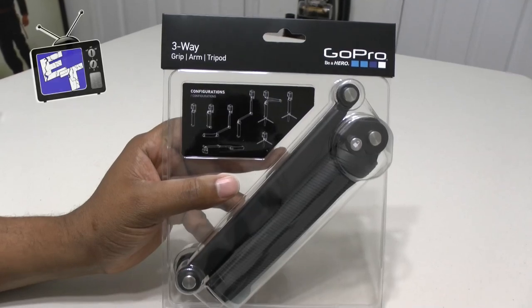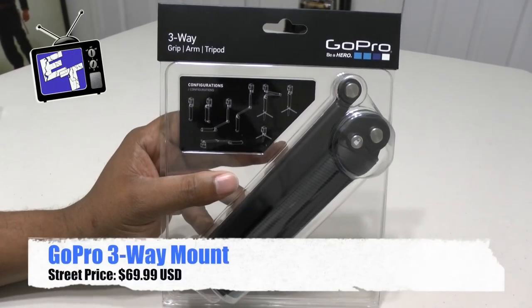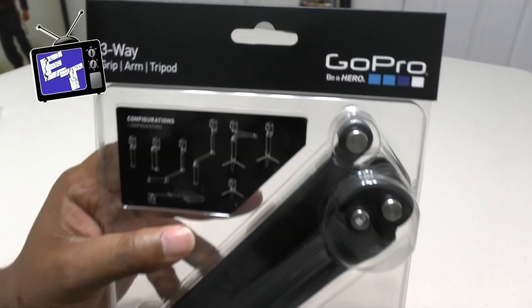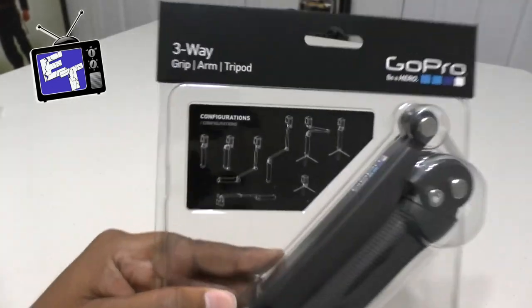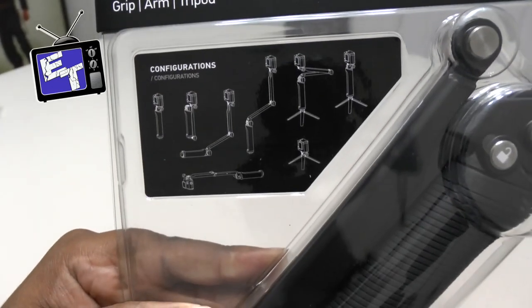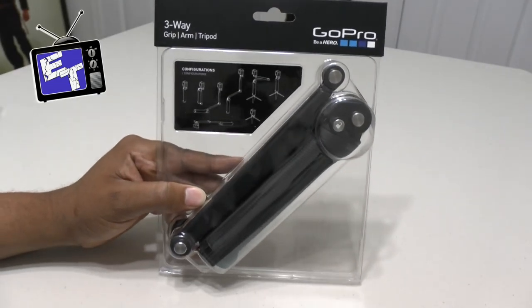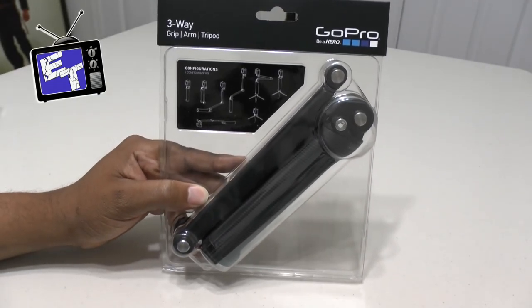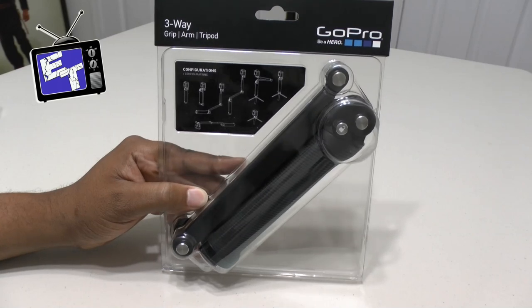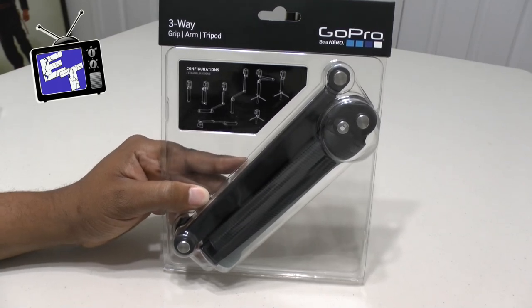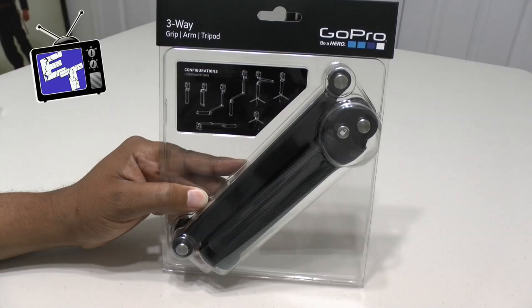Alright guys, so check it out. I've got this three-way grip arm and tripod and it is an official GoPro product. It shows you right here all the cool things that it will do. I had to pick this thing up, it is brand new, just introduced for summer 2014, and it is a little pricey. This guy comes in at $69.99.